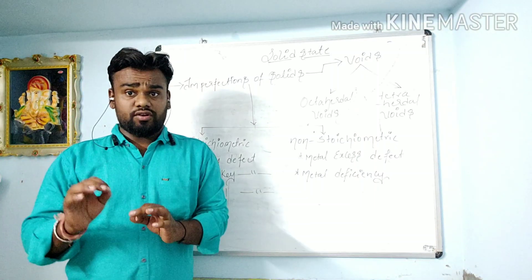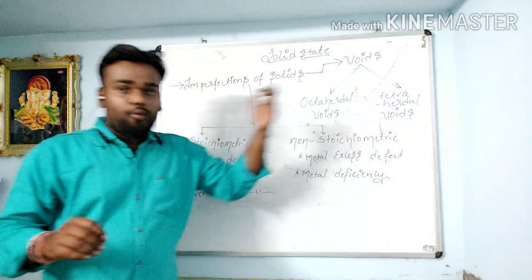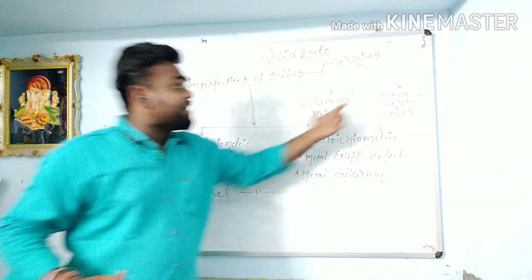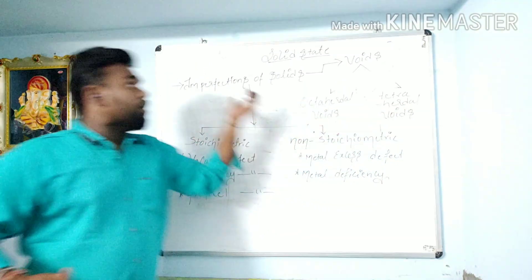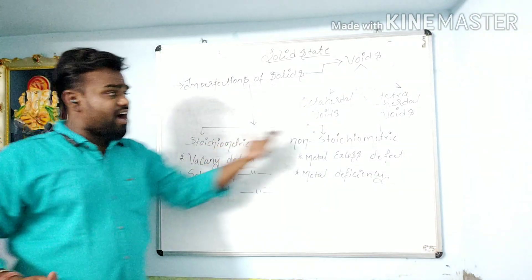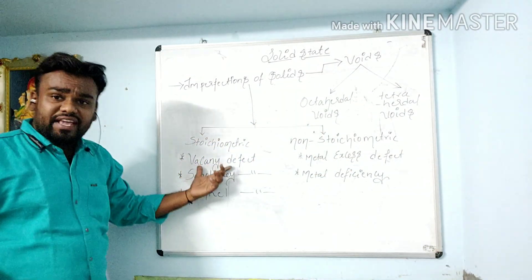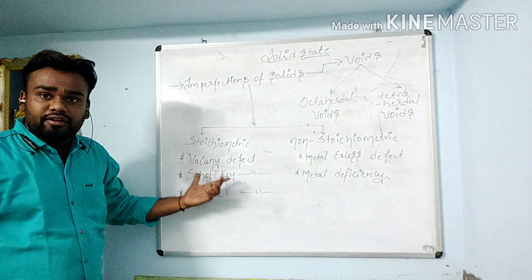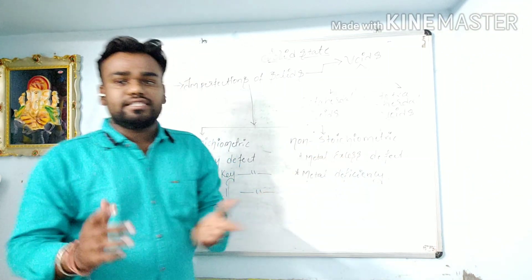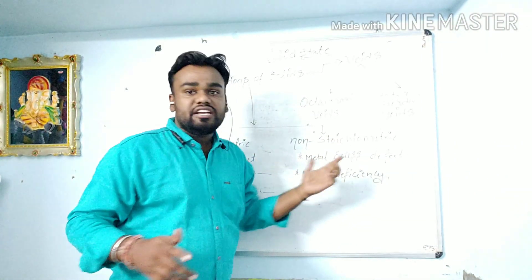The last topic in Solid State is imperfections of solids. Voids are classified into octahedral and tetrahedral. Imperfections of solids are classified as stoichiometric and non-stoichiometric. Stoichiometric defects are further classified into vacancy defect, Schottky defect, and Frenkel defect. Non-stoichiometric defects are classified into metal excess defect and metal deficiency defect.